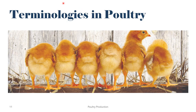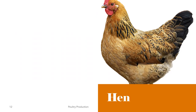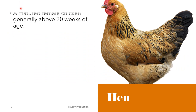Let's now proceed to the different terminologies commonly used in poultry farming or poultry production. Our first terminology is the hen. The hen is a matured female chicken, generally above 20 weeks of age. It is also defined as the female of any bird, especially the adult female of the domestic fowl.